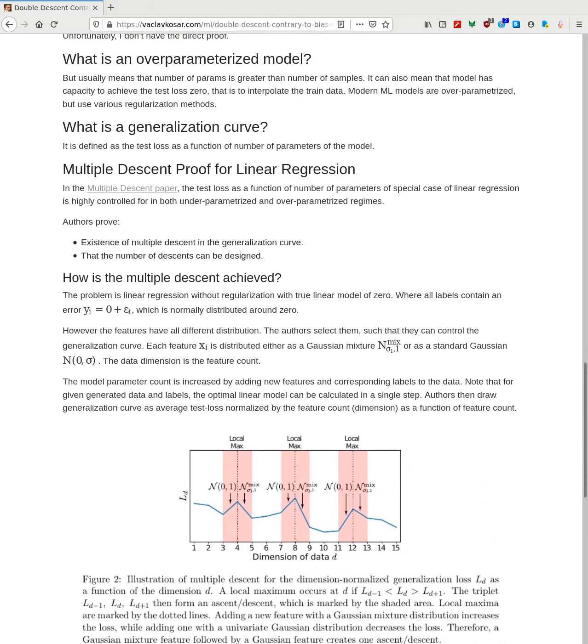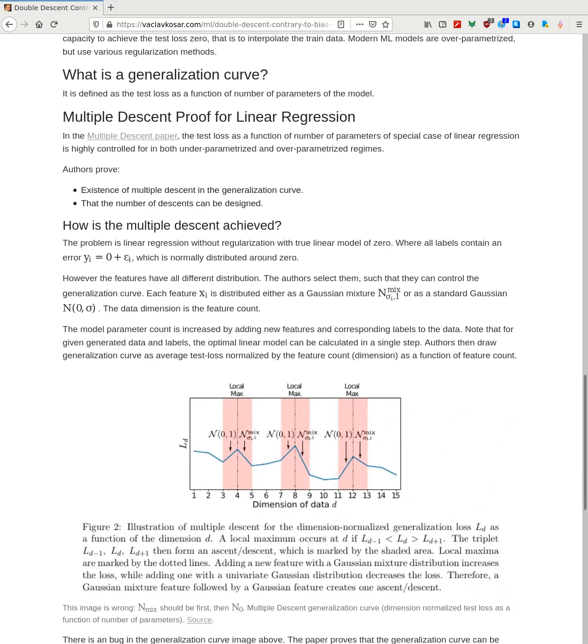So what is over-parameterized model? That's what we deal with when we speak about this bias variance trade-off. And so what it is. Usually it means that the number of parameters is greater than the number of samples. It can however mean also that the model's capacity is large enough to achieve test loss zero. That is to interpolate the train data. Modern machine learning models actually operate in this area, but they use heavy regularization.